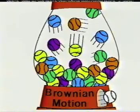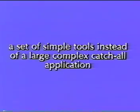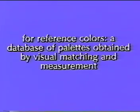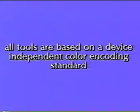You have now seen most of our color selection environment. We have shown that we first select colors and then define shapes. We work on palettes instead of single colors, and we use a set of simple tools instead of a large complex catch-all application. For functional colors, we use a tool based on standard principles in the graphic arts, namely color theory. For reference colors, we use a database of palettes obtained by visual matching and measurement. If a final touch-up is necessary, all the colors in an illustration can be adjusted by manipulating points in a color space. And all tools are based on a device-independent color encoding standard.